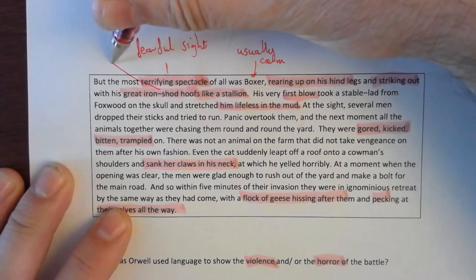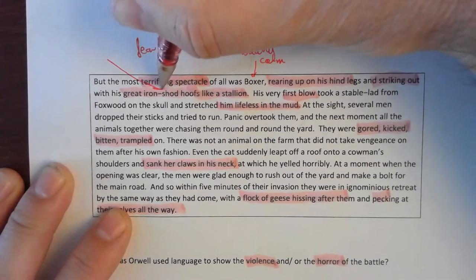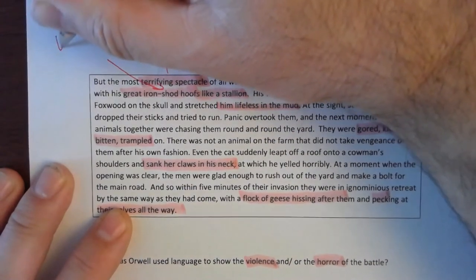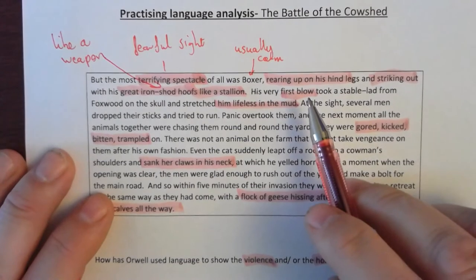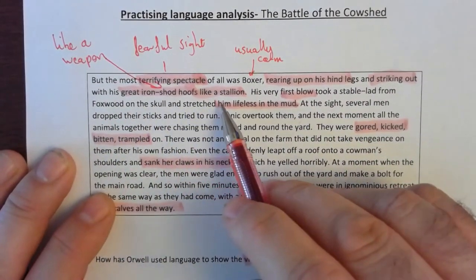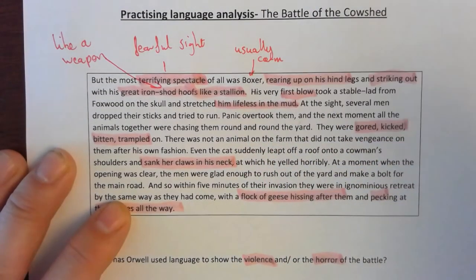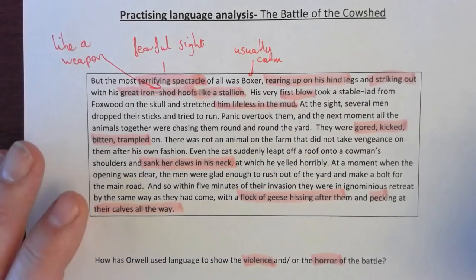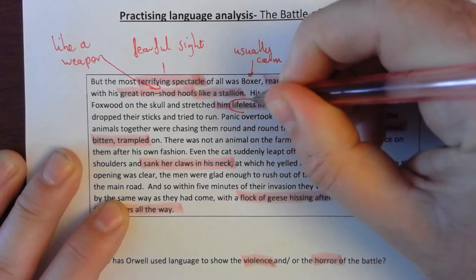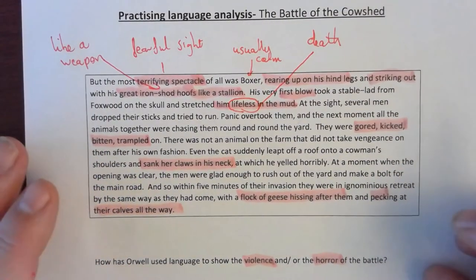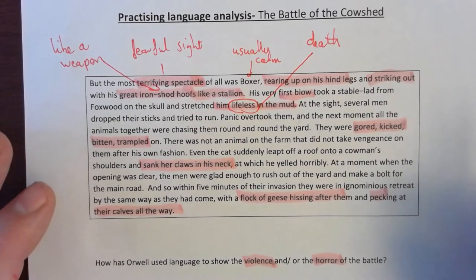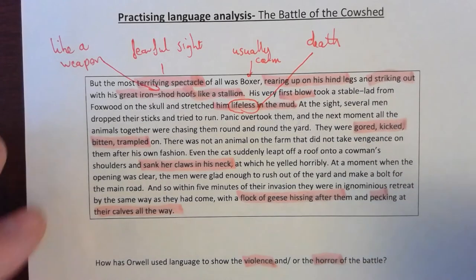Iron-shod hooves — the fact that he's using his horseshoes like a weapon. And the first blow took a stable lad from Foxwood on the skull and stretched him lifeless in the mud. Now we know this stable boy didn't actually die — he was just knocked out — but 'lifeless' intimates death. It shows that Boxer is capable of causing terrible injury. So we've got lots of violent phrases here that show Boxer is a strong beast who's fighting, and that shows the violence of the battle.